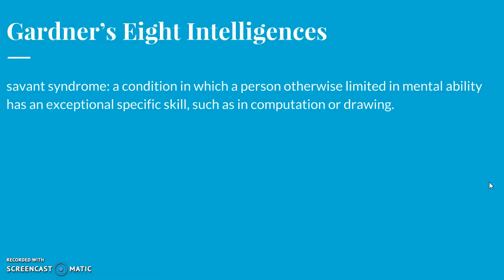Multiple intelligences can be seen in savant syndrome — a condition where a person otherwise limited in mental ability has an exceptional specific skill, such as computation or drawing. Kim Peake was a savant who did not have autism and was the inspiration for the movie Rain Man. In eight to ten seconds he could read and remember a page, and he learned 9,000 books including Shakespeare and the Bible by heart. He also learned maps from MapQuest and could give directions within any major city.